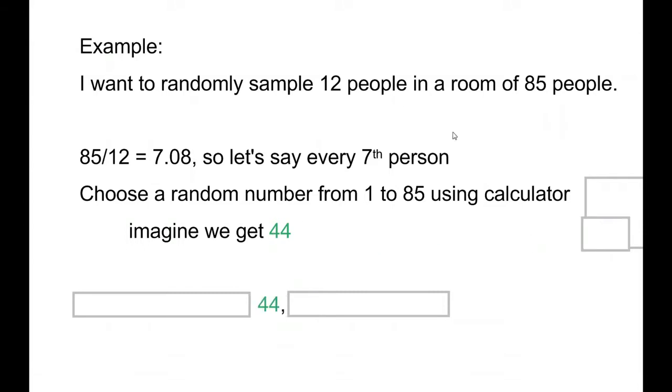We would sample person number 44, but we would also sample every 7th person in each direction. So add on 7, we're going to sample person number 51, and person number 58, and 65, and so forth, all the way until we get to the end of our list.